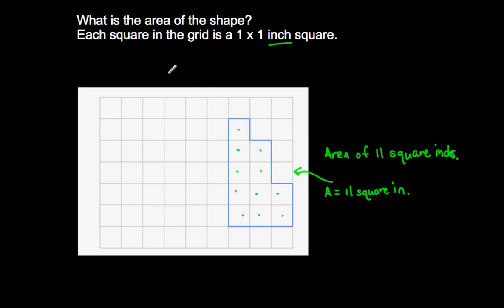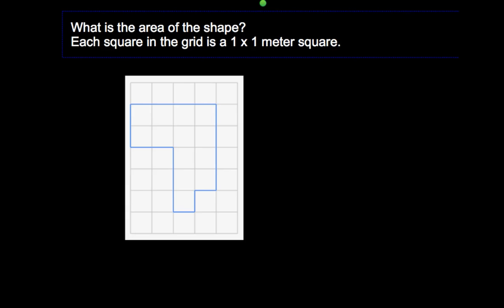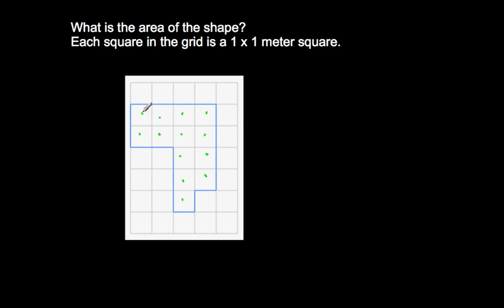Let's go on to another problem. We're being asked to find the area of the shape, and we're told that each square in the grid is a one-by-one meter square, so this right here is a square meter. We're going to count the number of unit squares: one, two, three, four, five, six, seven, eight, nine, ten, eleven, twelve, thirteen. This shape right here has an area of thirteen square meters.